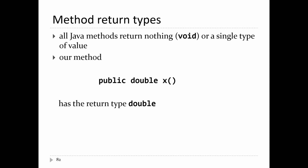A student asks: is this a type of global variable? The response is: no, this is not a variable — it's a method inside the Point2 class. As long as the Point2 class is visible, this method is also visible. So it's not really the same as a global variable.